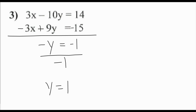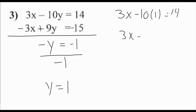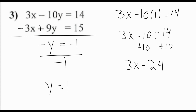With y equals 1, we plug back into the top equation: 3x minus 10 times 1 equals 14, so 3x minus 10 equals 14. Adding 10 to both sides gives 3x equals 24. Dividing by 3 gives x equals 8. So the solution to this system is (8, 1).